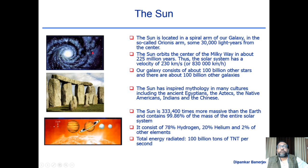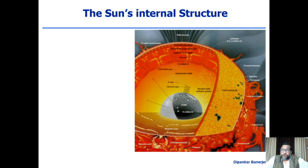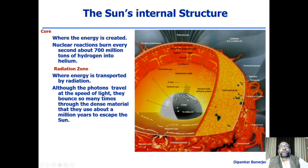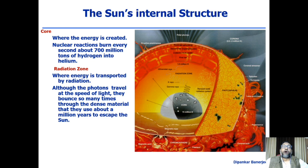Let's look inside the sun. What we see in the sky is the surface of the sun; we cannot see inside because it's like a plasma blob. By different methods, we now have some understanding about its internal structure. There is a core right in the middle where nuclear reactions burn about 700 million tons of hydrogen into helium every second. Then there is the radiative zone — although photons travel at the speed of light, they bounce so many times through the dense material that it takes about a million years to escape the sun.